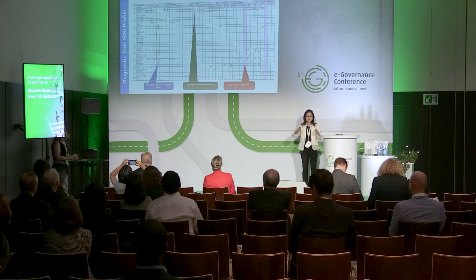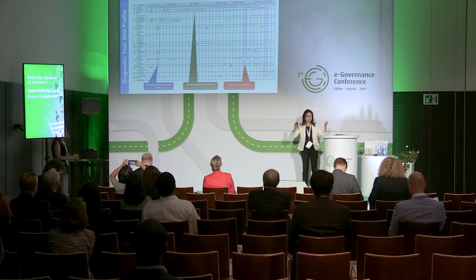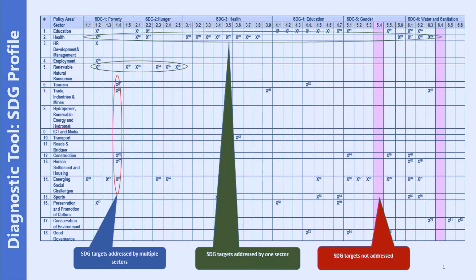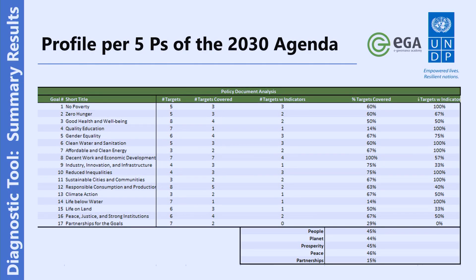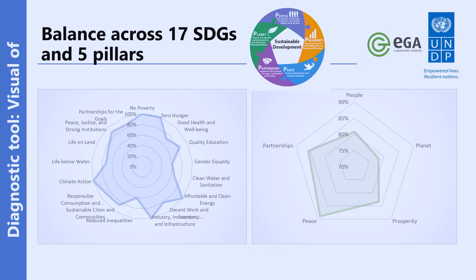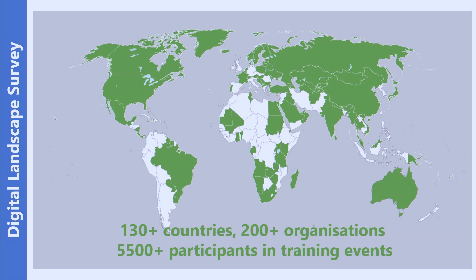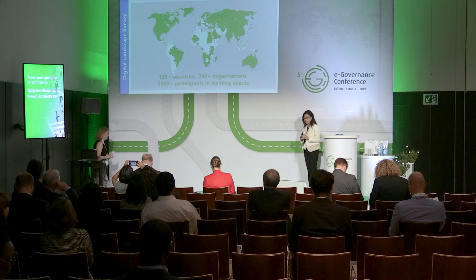This is just a portion of the result — it's huge. We then create a profile of where the country is across the five pillars, showing where they are on peace, prosperity, and so on. My time is up, so I'll give the floor to my colleague Marit.